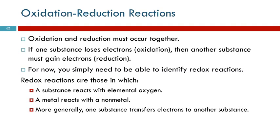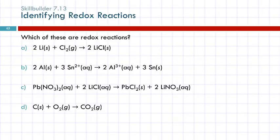So what you need to be able to do at this point is just to identify, yes, that's a redox reaction. So redox reactions are things where we have a substance reacting with elemental oxygen. Anything plus O2, oxidation reaction, reduction reaction. If you have a metal reacting with a nonmetal, like sodium and chlorine. More generally, it's when you have one substance transferring electrons to another substance. So let's practice that.